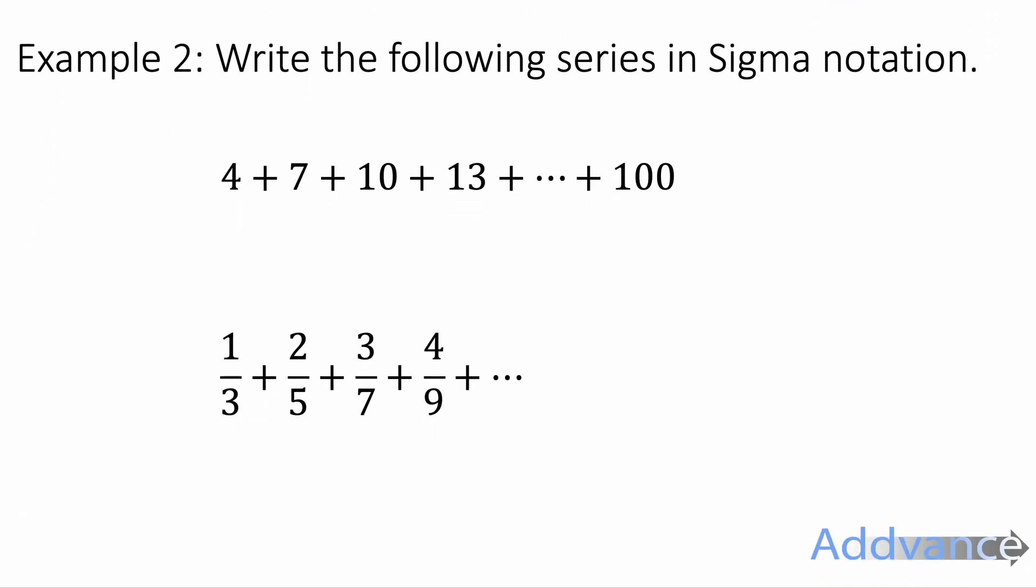Example 2. Write the following series in sigma notation. So 4 plus 7 plus 10 plus 13 all the way up to plus 100. That dot dot dot in the middle just means we're adding all the terms up to 100.